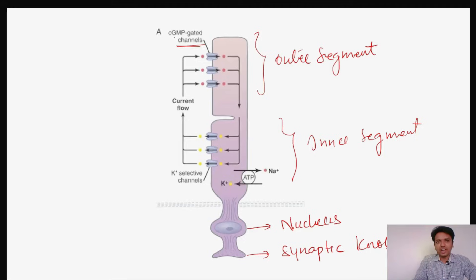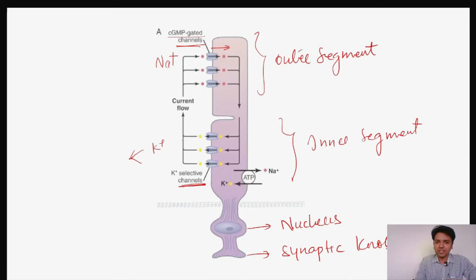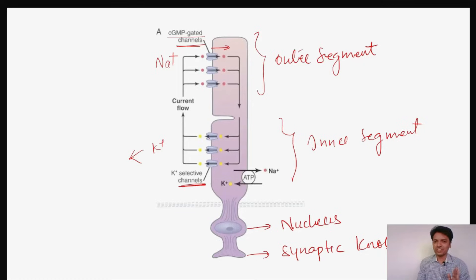In the outer segment of the rod there are channels called cyclic GMP-gated channels, which cause influx of sodium — sodium from outside enters the rod. In the inner segment there are potassium-selective channels causing efflux of potassium — potassium from inside goes out. So on one side a positive ion enters the cell, and on the other side a positive ion leaves.